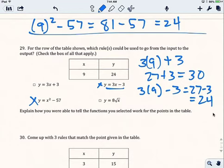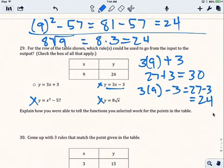All right, let's check the last one. So y=8√x. I'm going to take the input, put it under the square root, and then multiply the answer by 8. So square root of 9 is 3. So that's 8 times 3 equals 24. So this last one works as well.